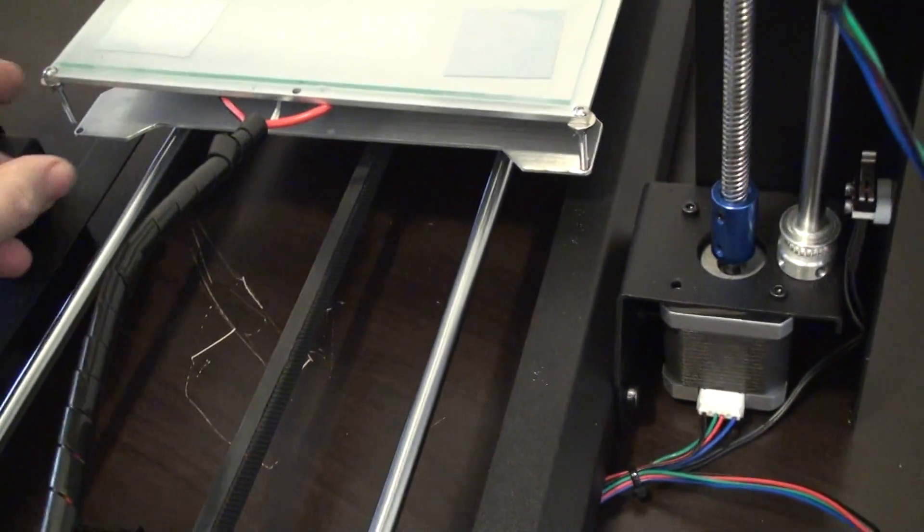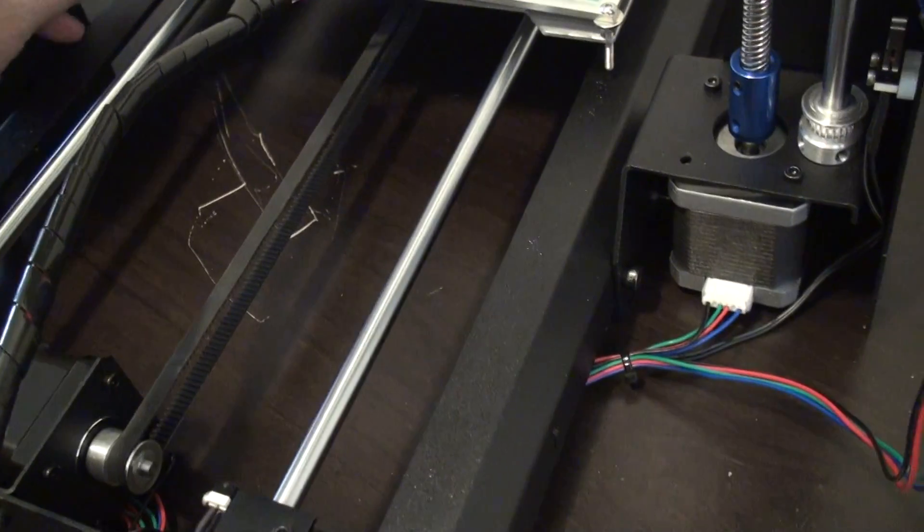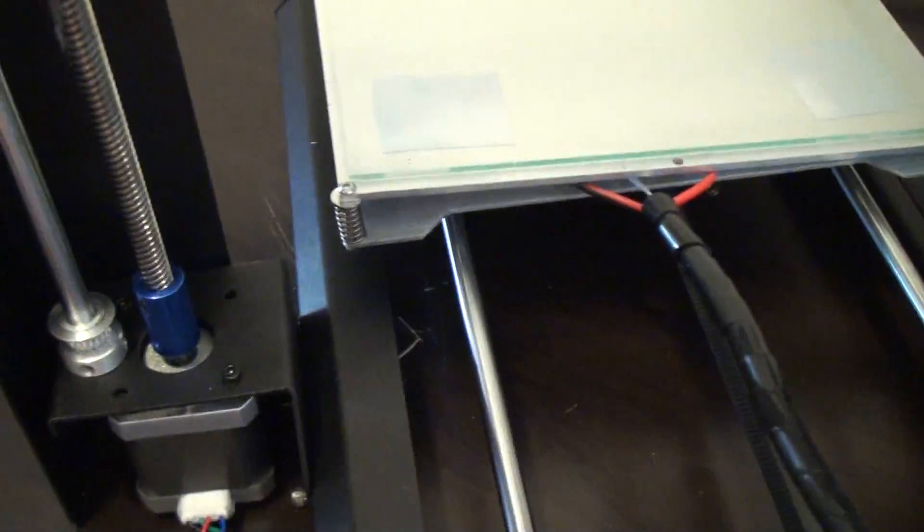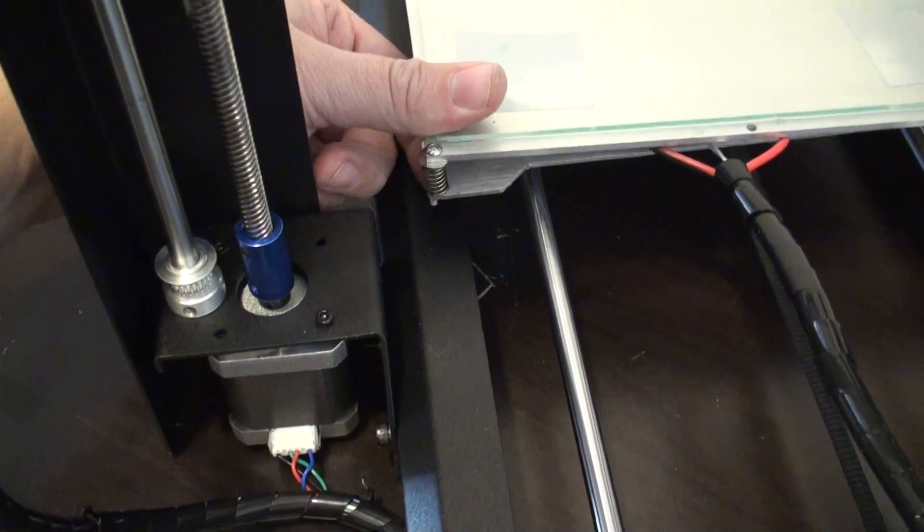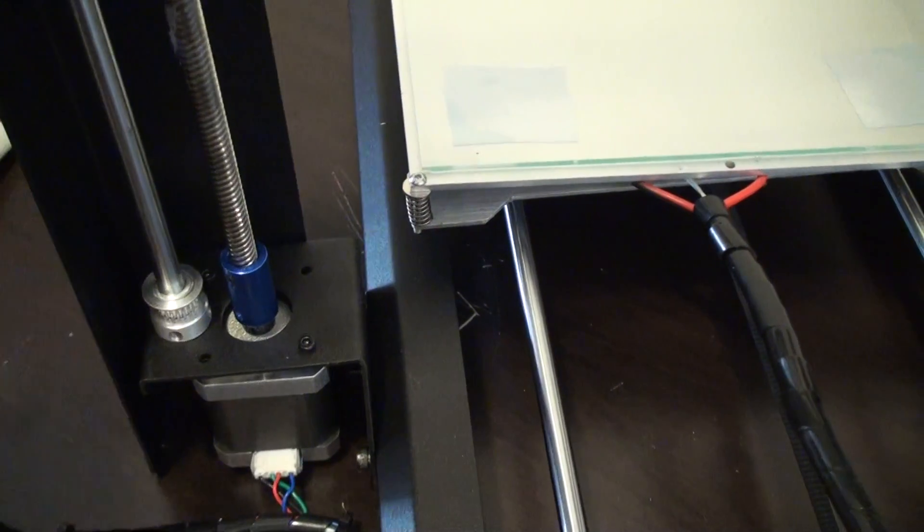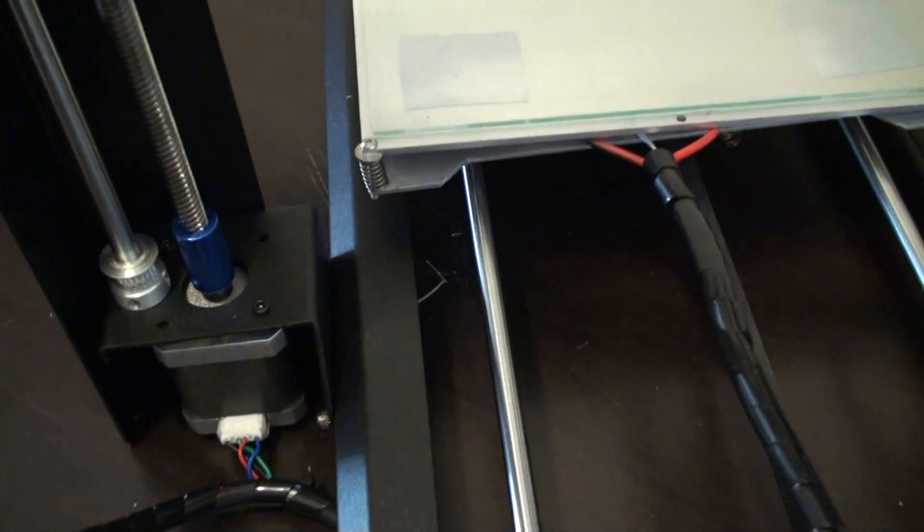So what will happen here is if we put the washer in on this side, you can hear it at first kind of binds. So what you do is simply put it together and then run it up and down a couple times like this, and basically what will happen is that screw will just ever so slightly file the hole.